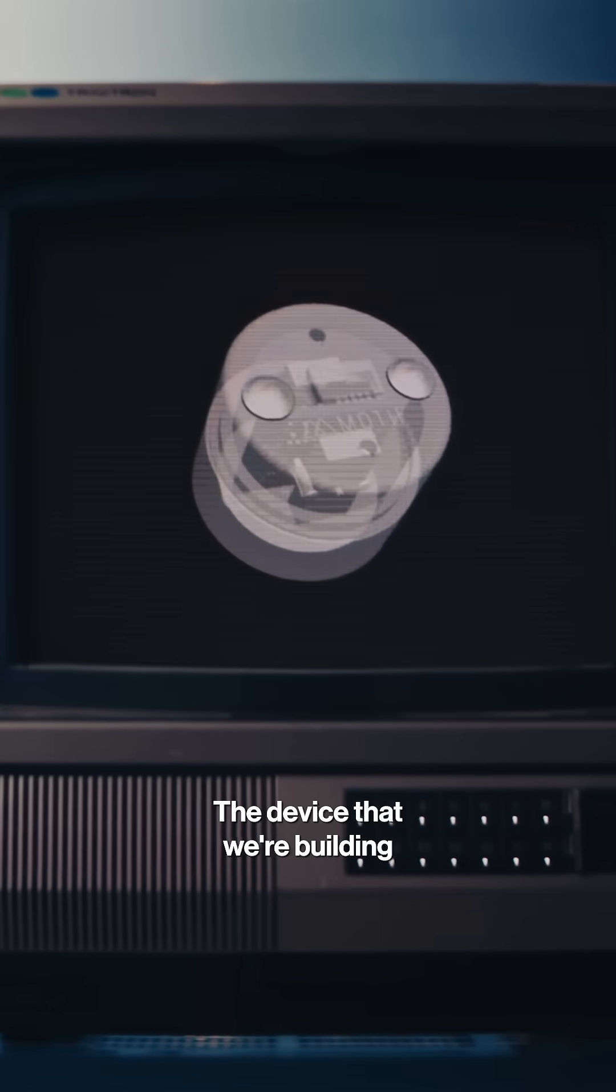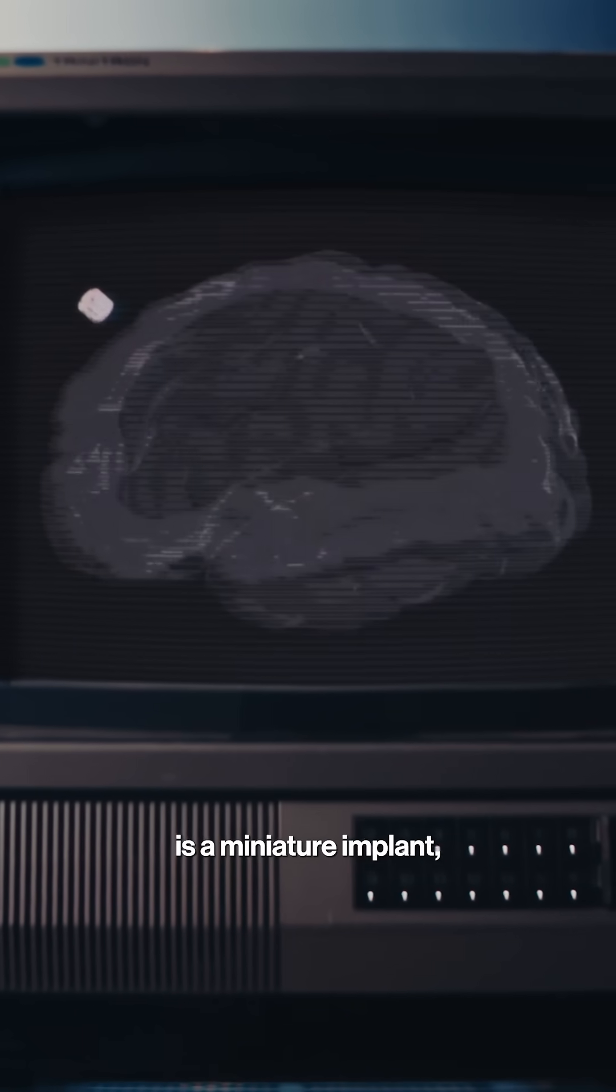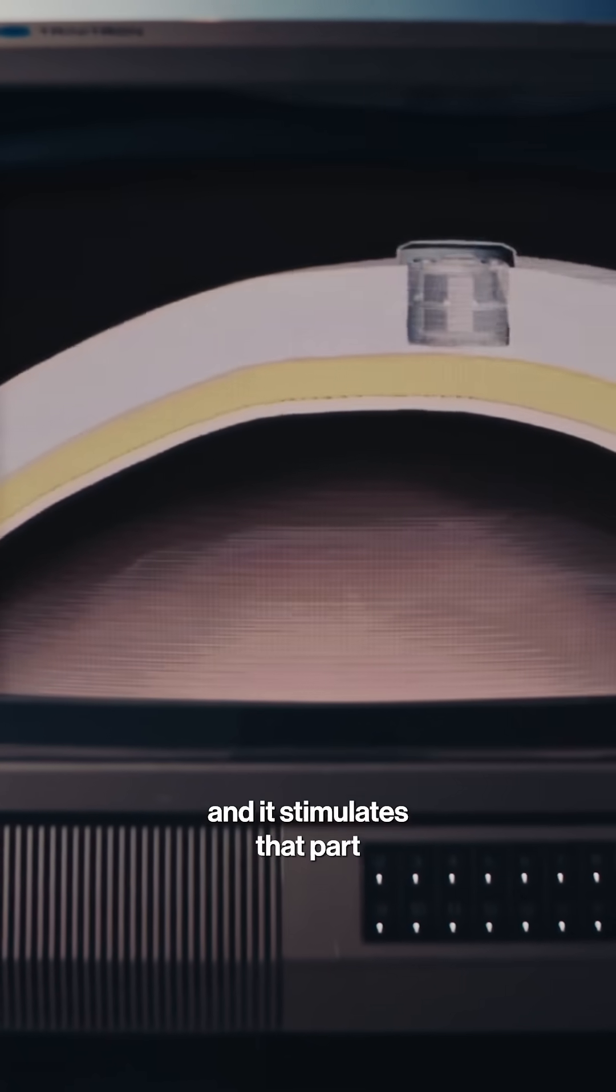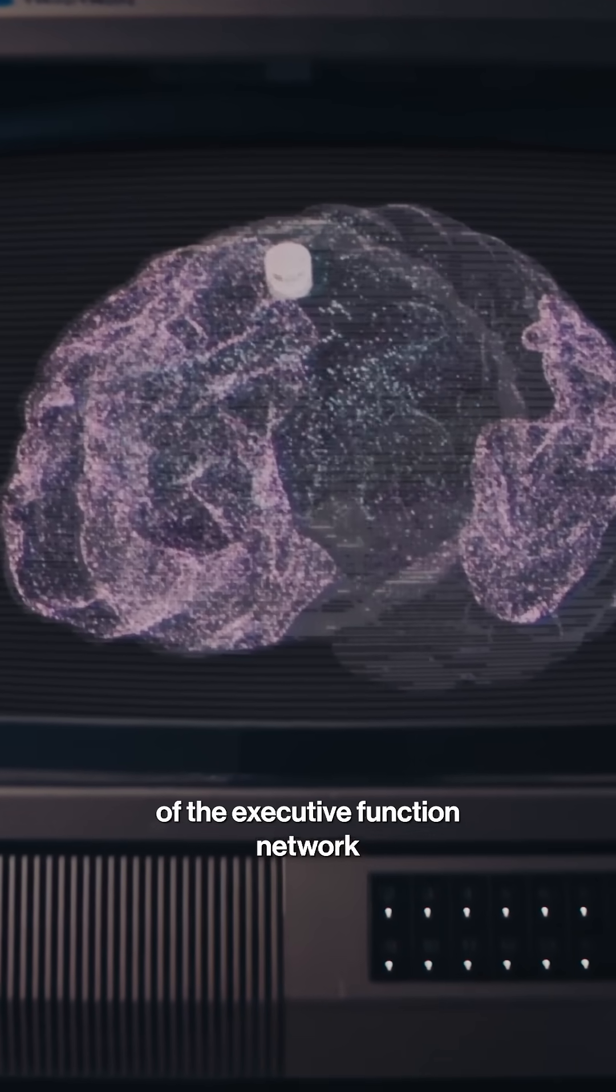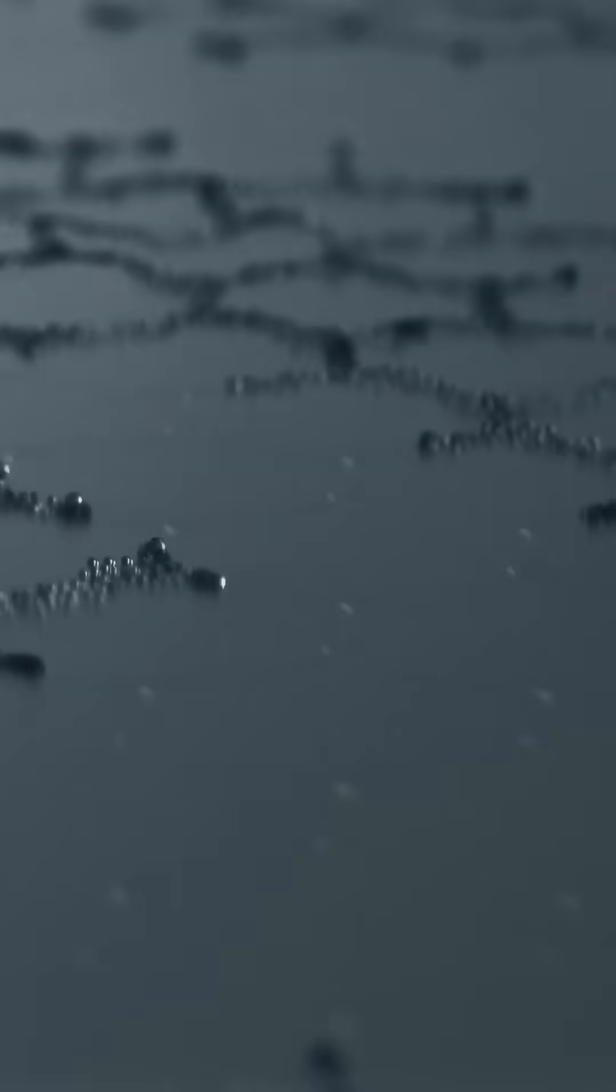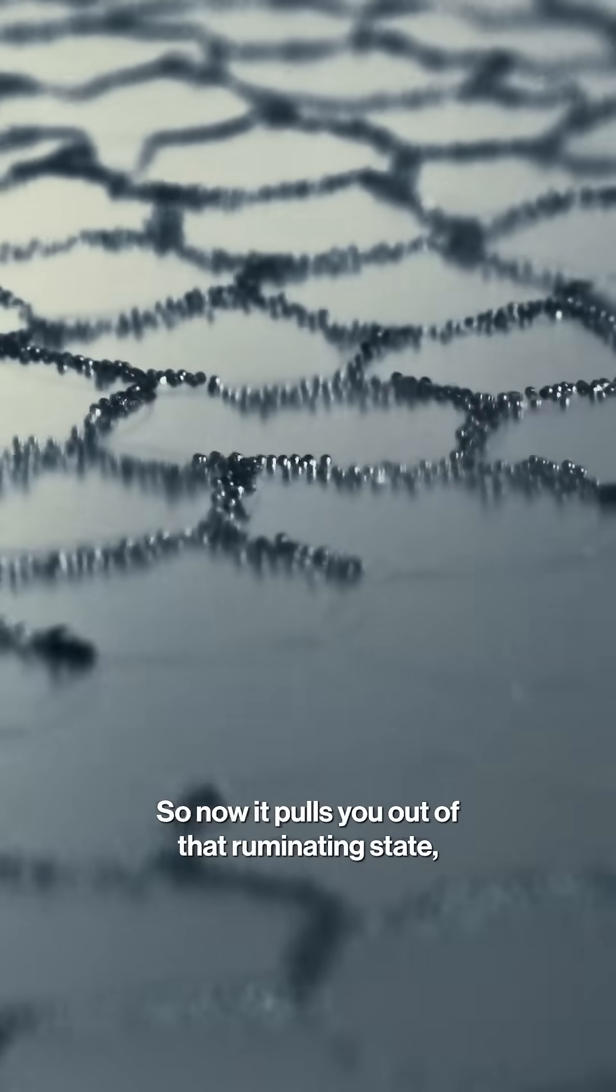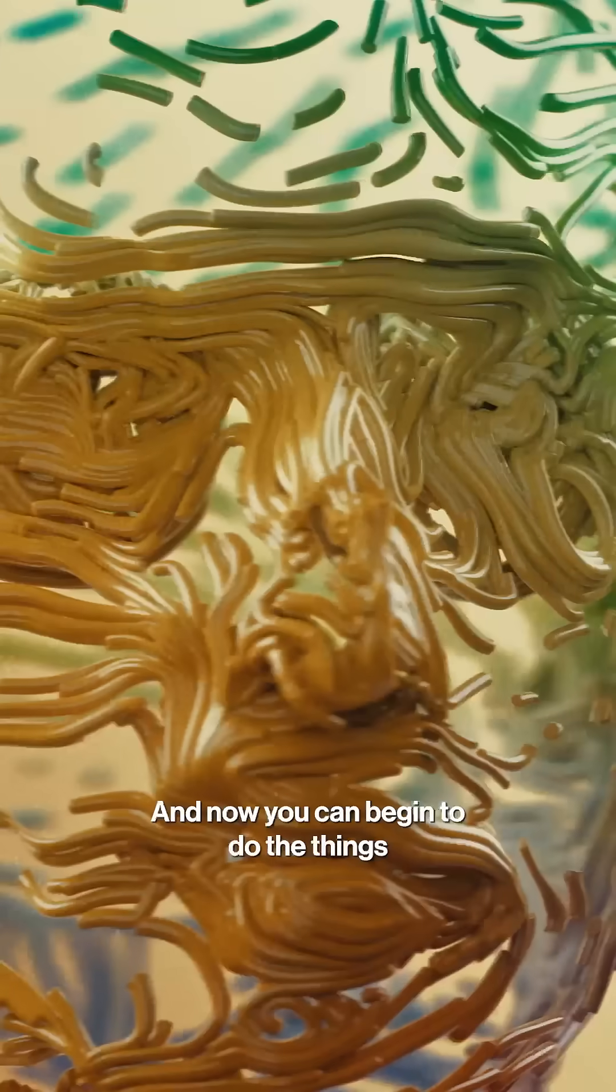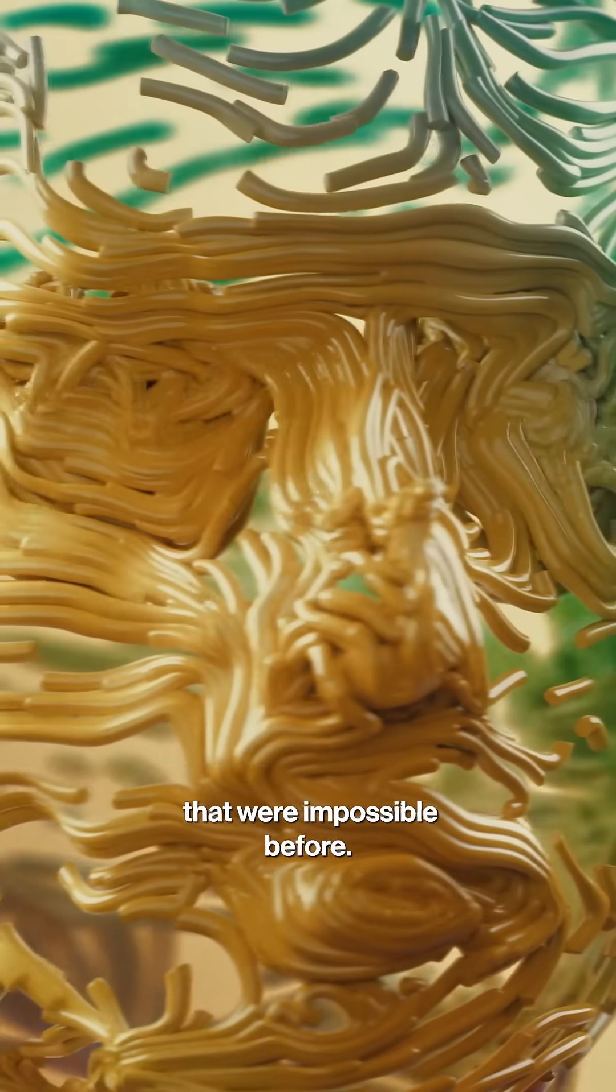The device that we're building is a miniature implant, and it stimulates that part of the executive function network that increases its activity, so it becomes strengthened. So now it pulls you out of that ruminating state, the state of those negative emotions, and now you can begin to do the things that were impossible before.